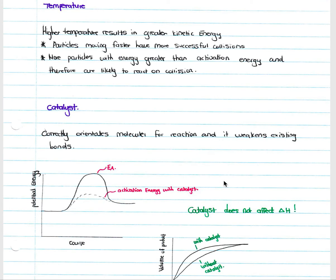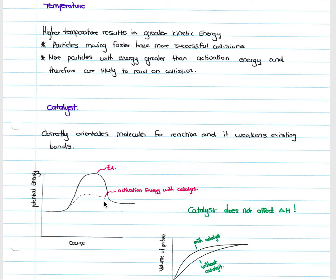A catalyst works by correctly orientating molecules for reaction and by weakening existing bonds. If asked to explain how a catalyst works, state that it correctly orientates molecules and weakens existing bonds. On the potential energy graph, the activation energy with a catalyst is much lower than without. Importantly, a catalyst does not affect delta H — the positions of products and reactants remain the same.